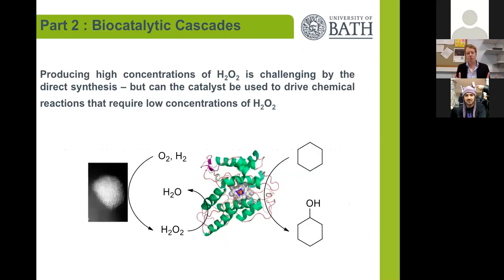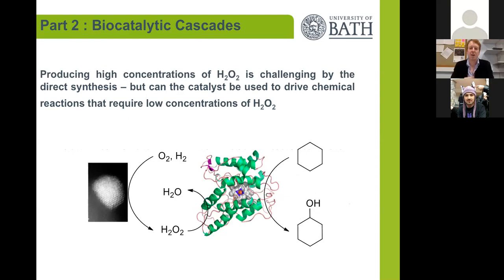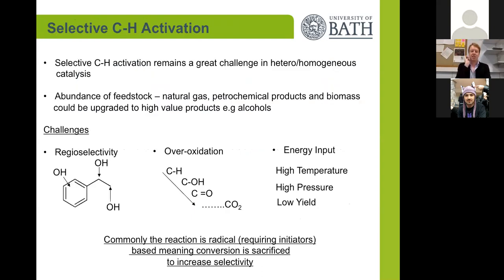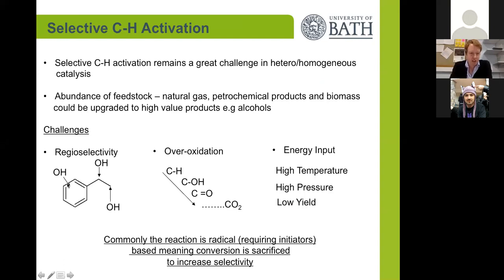It's quite difficult to design these catalysts to make high concentrations of hydrogen peroxide. So the next part of my talk shows how we can use low concentrations of hydrogen peroxide to facilitate chemical transformations. One of the most challenging chemical transformations we're looking at is CH activation, which remains a great challenge in heterogeneous and homogeneous catalysis despite the abundance of feedstocks. Many of the problems are regioselectivity, controlling over-oxidation, and minimizing the energy input needed to overcome these stable CH bonds.